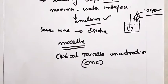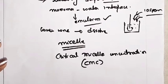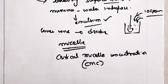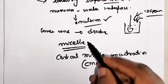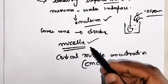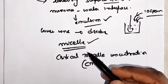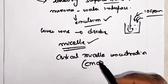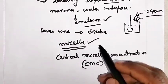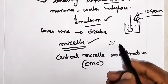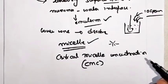CMC is nothing but the concentration of surfactant or surface active agent beyond which only micelle formation will take place. Below this concentration, it may dissolve in the water. But above this particular concentration, it does not dissolve — instead, they aggregate and form what we call micelles.